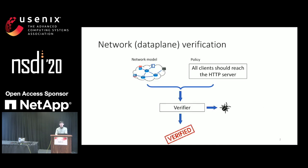Network verification, particularly data plane verification, in recent years has been emerging as a promising technique to detect network outages before they happen. At a very high level, this problem takes two pieces of inputs: one is a model of a network, and the other is the intended policy we want to check. The verifier will automatically run some algorithm to check whether this policy is satisfied on the network or not.